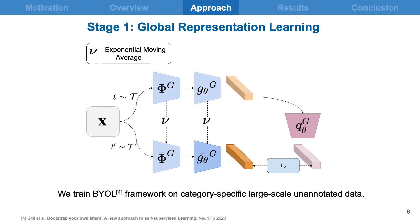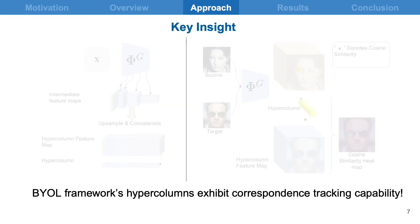As the first stage, we train the BYOL framework, where given an image and its two augmentations, the predictor network Q takes the representation of one augmentation of the image and predicts the representation of the second augmentation. The predicted representation is supervised by a momentum average feature extractor Phi and feature projector G. The key insight we find in such a representation is that it is capable of tracking a point semantically from a source image to a target image.